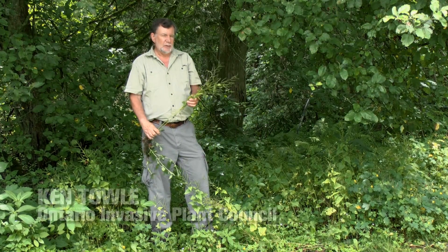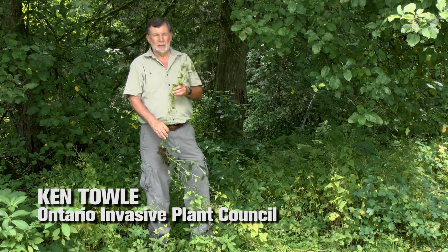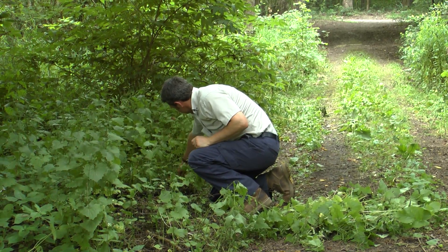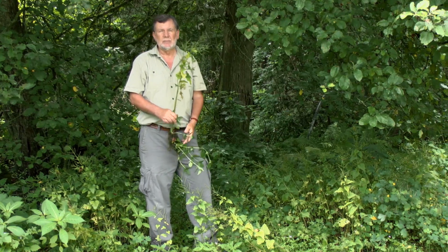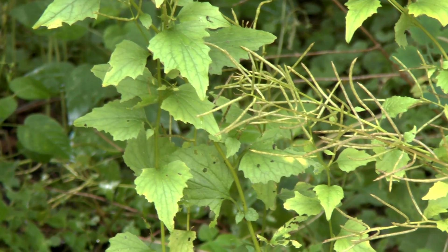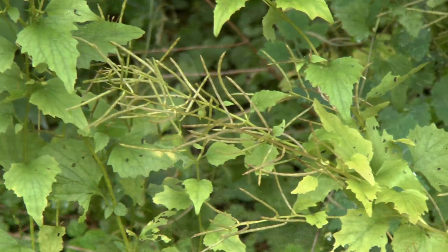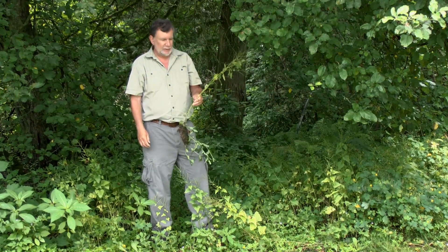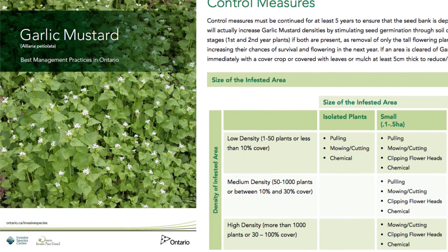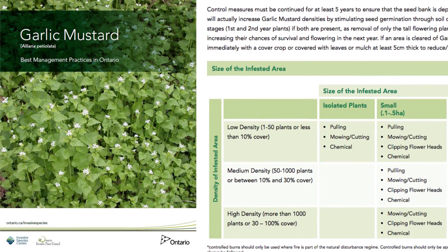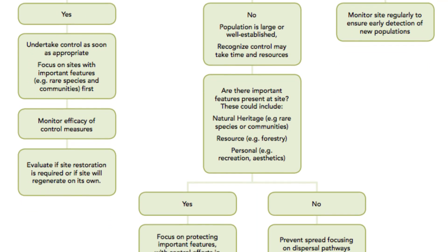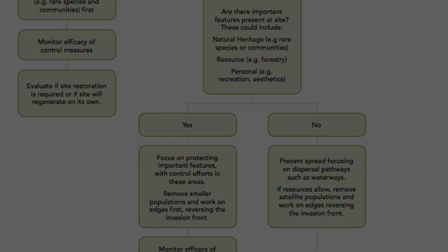You can pull garlic mustard if you find it in small clumps along the sides of a trail, but you may have to go back for several years because there may be some seeds in the seed bank and the plant will keep growing up. But if you keep doing that diligently for a number of years, it can be an effective way of gradually eliminating the plant. Ontario has a garlic mustard best management practice guide that is available to the public and outlines the steps you can take to control garlic mustard on your property.